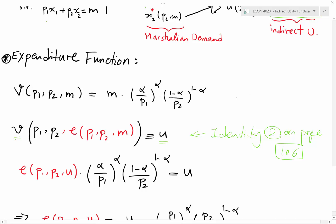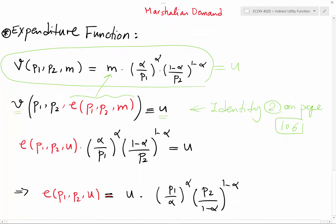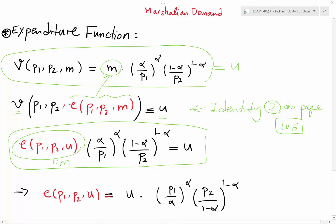If we are given this indirect utility function and we substitute the expenditure function for m, and set it equal to u — as we have in the direct utility function — then from there we can derive the expenditure function. Here I substitute: this is my expenditure function, equivalent to m, and then I set it equal to u.